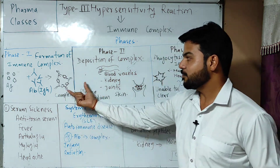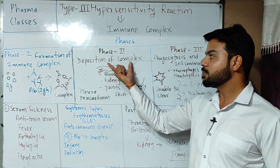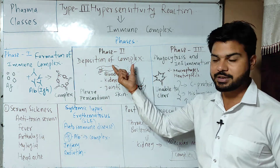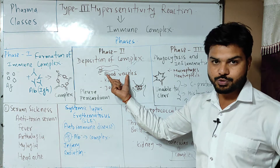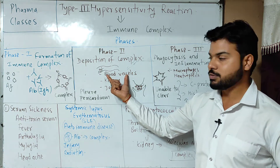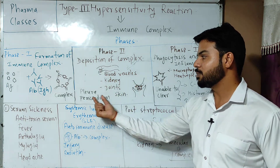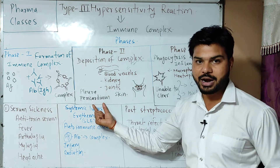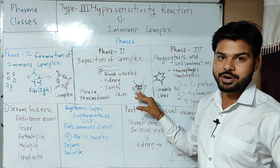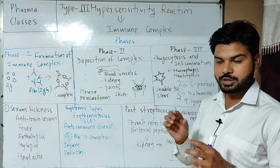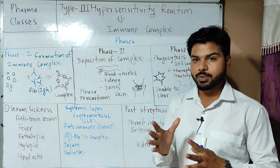After this formation of the complex, there is another phase called the deposition of the complex. This complex is deposited to different tissues and blood vessels — including the kidney, joints, skin, pleura, or pericardium. This is because of the high filtration rate in these areas, where the capillaries are more abundant.